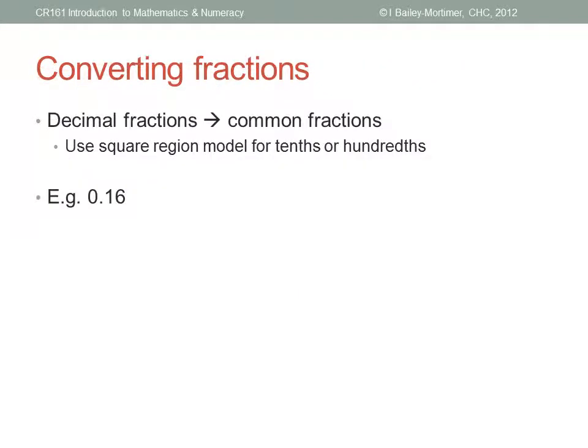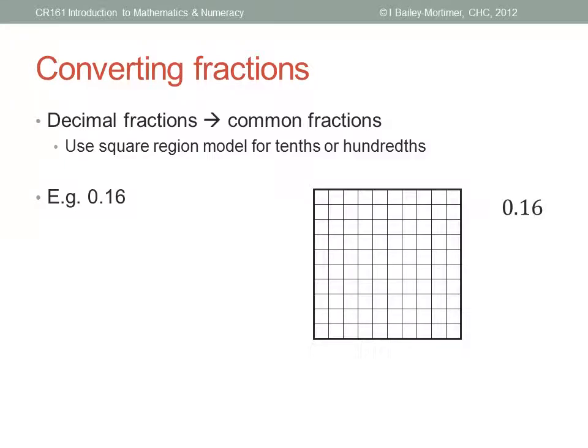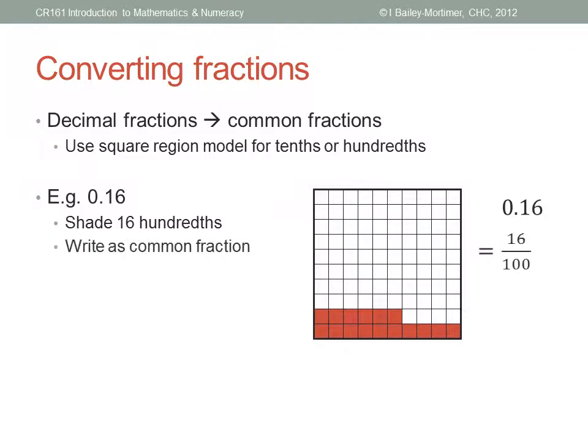In fact, we can use this model to convert a decimal fraction into a common fraction. For example, suppose I have zero point one six. Well, it's got two decimal digits, so I'm going to need hundredths. Draw a square grid with a hundred squares, ten by ten. Shade sixteen squares, sixteen hundredths. So write it as a common fraction, sixteen over a hundred.